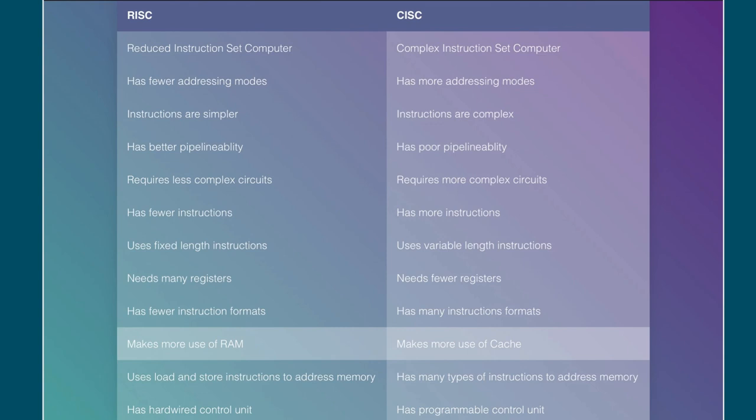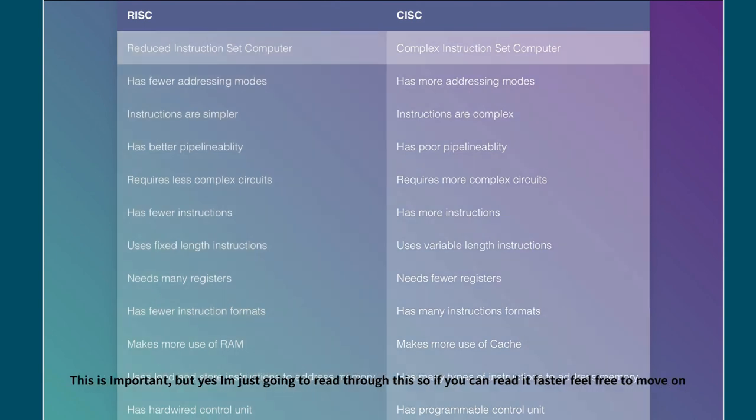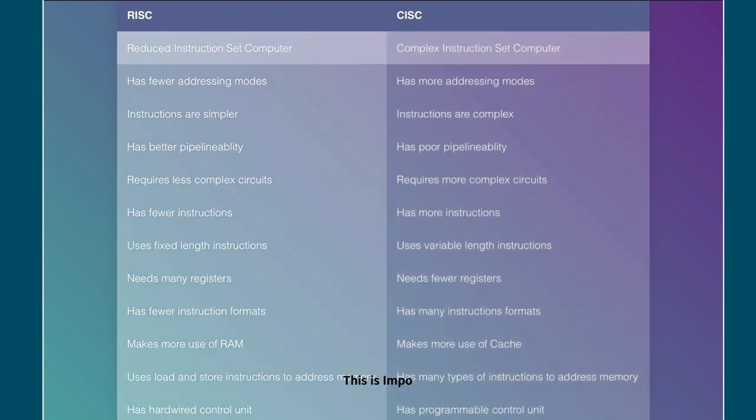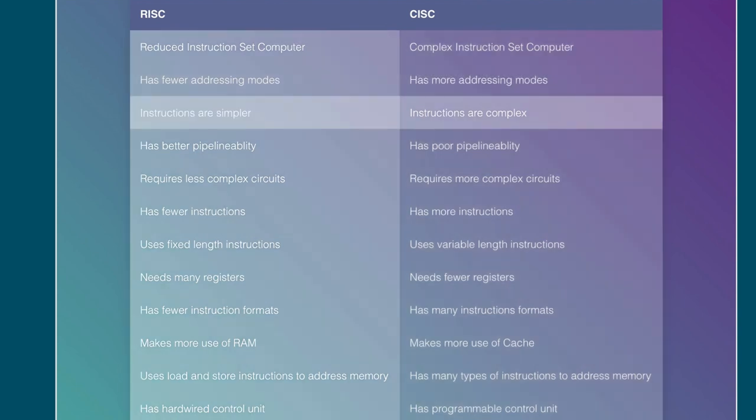These are pretty crucial to know the differences between RISC and CISC processors. So as we saw, RISC stands for reduced instruction set computer, and CISC stands for complex instruction set computers. RISC has fewer addressing modes, while CISC has more addressing modes. RISC has simpler instructions, and CISC has more complex instructions. RISC is better for pipelineability, which we'll see what it is a bit later on. CISC has rather poor pipelineability. RISC requires less complex circuits. CISC of course requires more complex circuits.